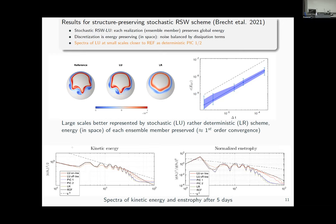The take-home message is that the stochastic version at some point brings feedback mechanisms from small to large scale that a deterministic model wouldn't have. Thank you.